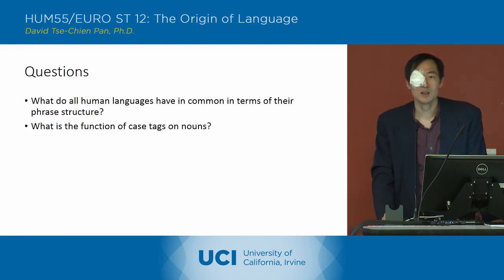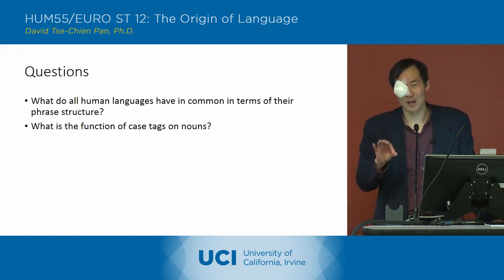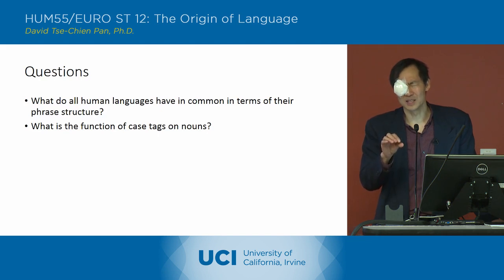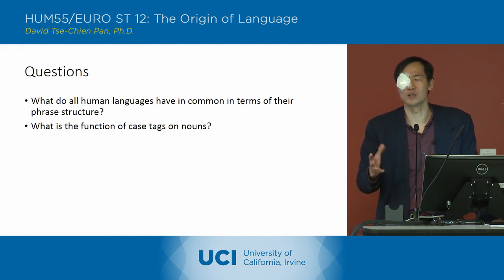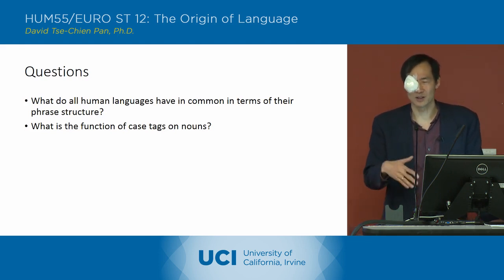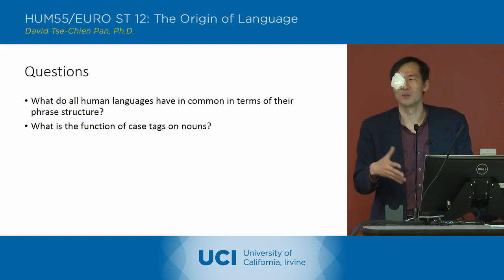So prepositional phrases in terms of modifiers — prepositional phrases can actually do either. They can also be assigning role players, but they could also be modifiers. So there are two ways in which prepositional phrases can work: they can assign role players to nouns, but they could also be modifiers.